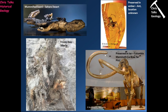Here we have a mummified lizard from the Sahara Desert — you can see it's perfectly preserved with the skin right there. In this instance the fossil would be complete with the skeleton, skin, internal organs, and muscles — everything — with the exception that it's been desiccated. Any part of the body that's particularly water-rich, like the eyes, you can see there have been lost.